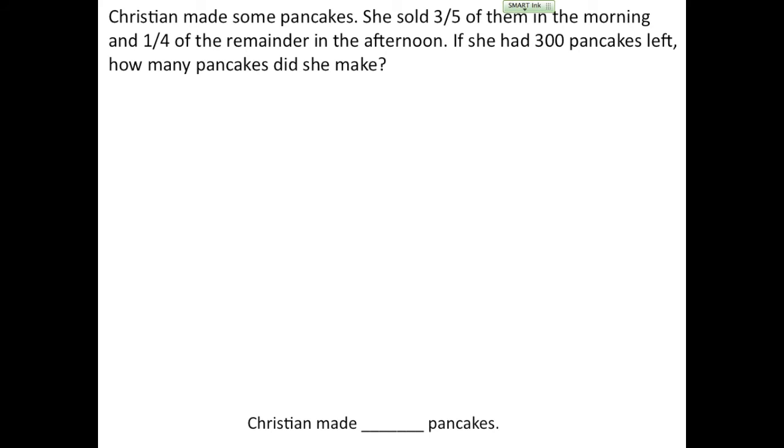Well, I'm going to draw a bar that represents her pancakes and we don't know how many total pancakes she made. So I'm going to label the whole thing with a question mark. Then I'm going to read just the first part of my second sentence. She sold three-fifths of them in the morning.